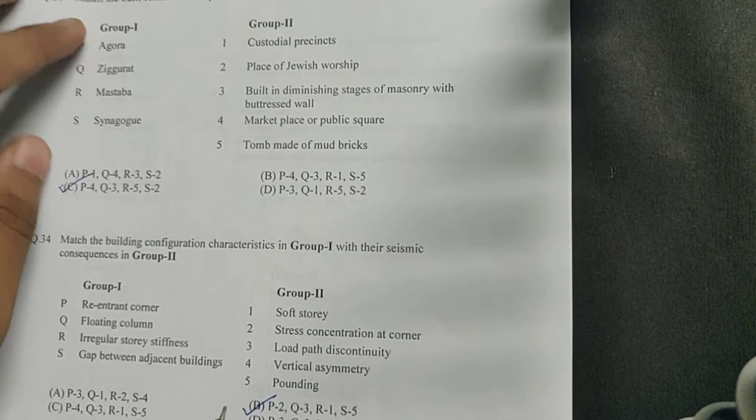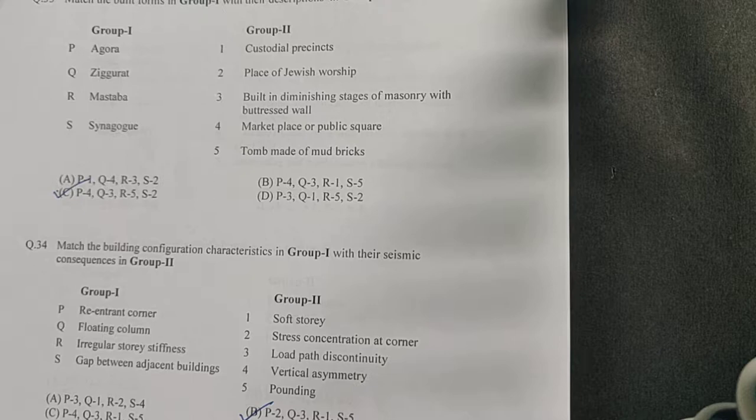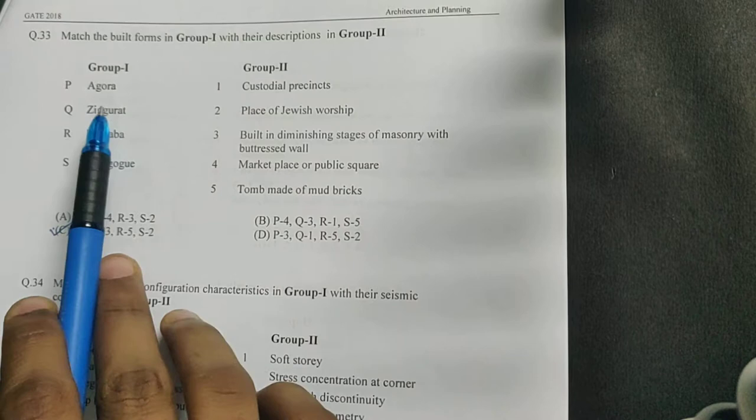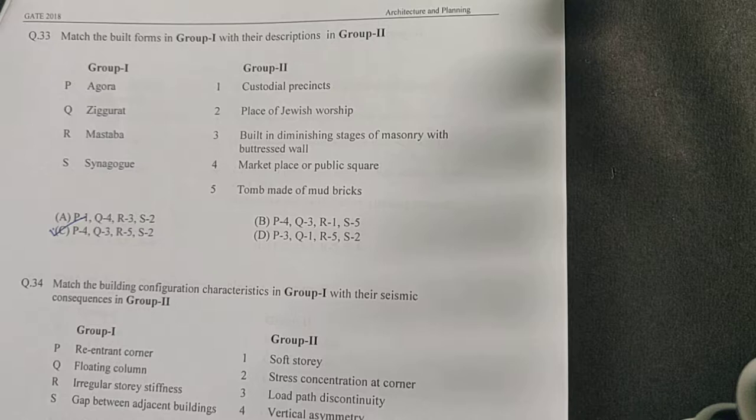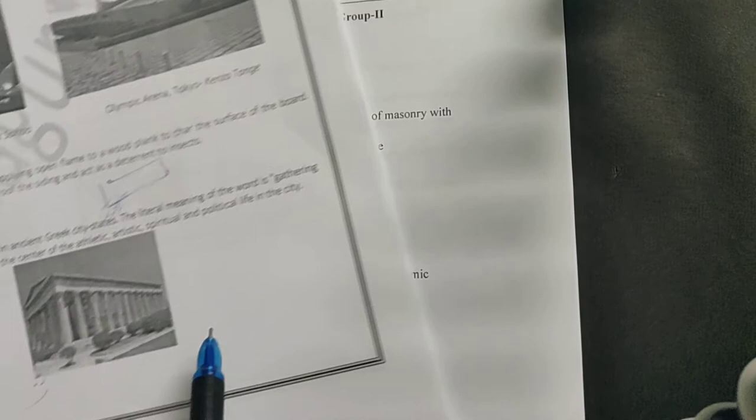Next, you have some building forms given and their descriptions: agora, ziggurat, mastaba, and synagogue. As we know from history of architecture studied in first semester, agora was there in Greek architecture. Agora stands for a marketplace or a public square, and an example of agora for Greece is this.